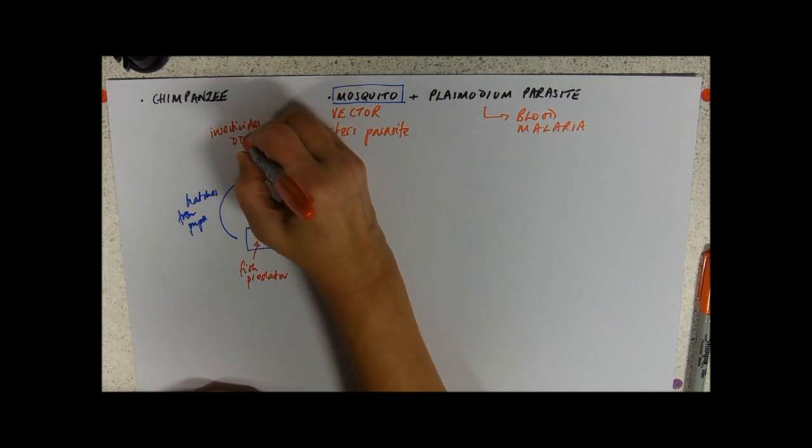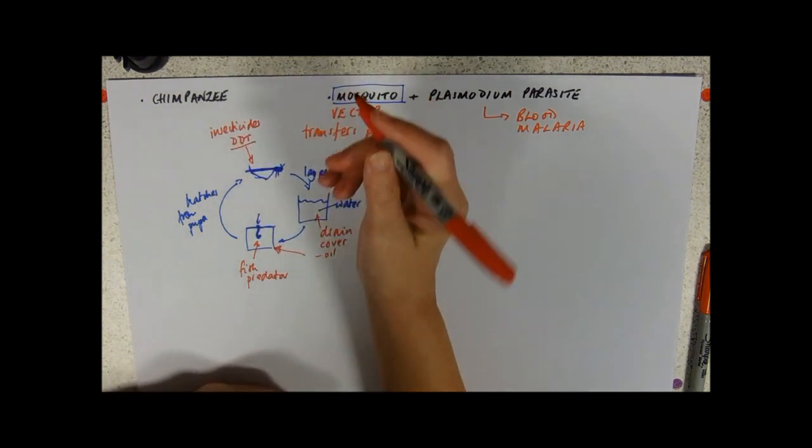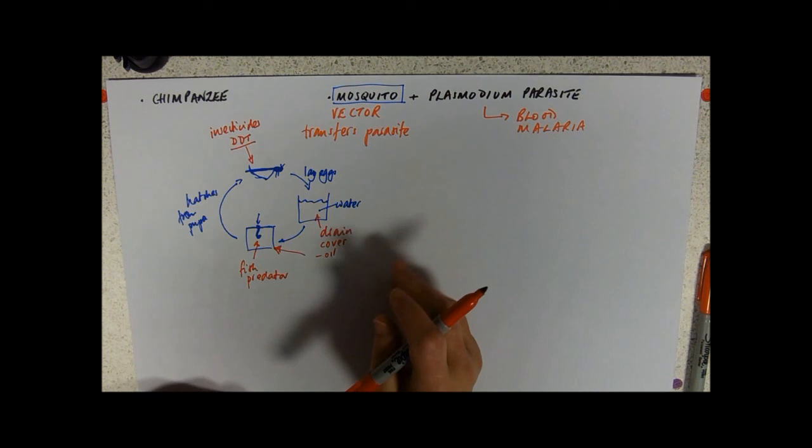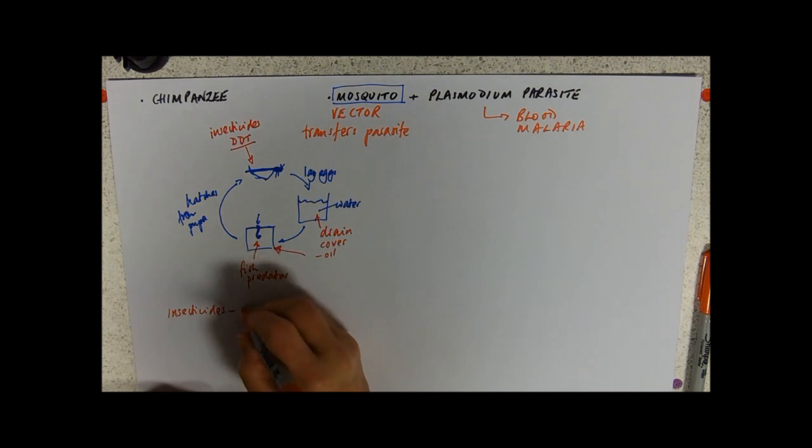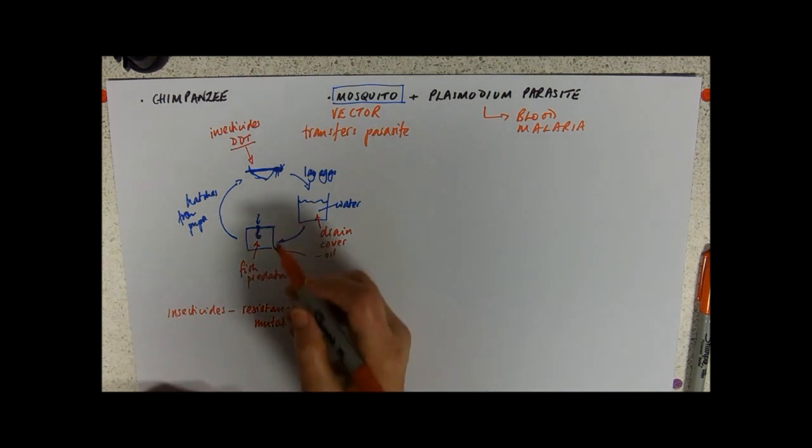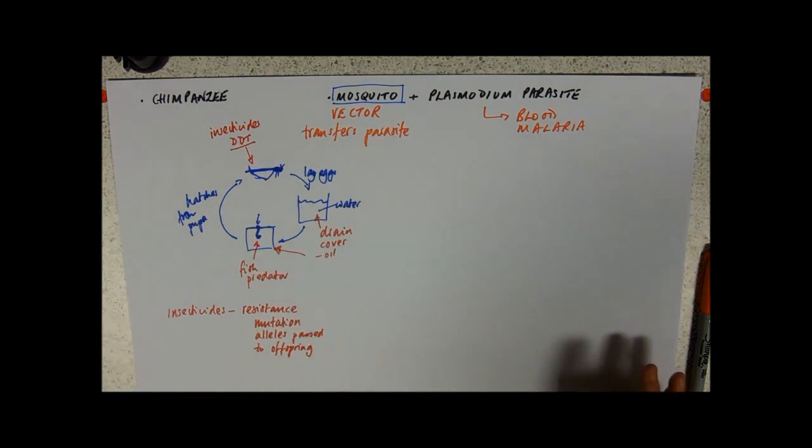And certainly DDT was kind of the miracle insecticide of the 1940s and 50s and it did do a lot of good at reducing mosquito populations. The problem with insecticides is that you get this phenomenon called resistance. Now this is an evolution thing. So resistance arises through mutation. The non-resistant mosquitoes die and the alleles are passed to offspring. So it spreads really quickly. I don't know what the generation time of a mosquito is but I'm imagining that's really quite small.